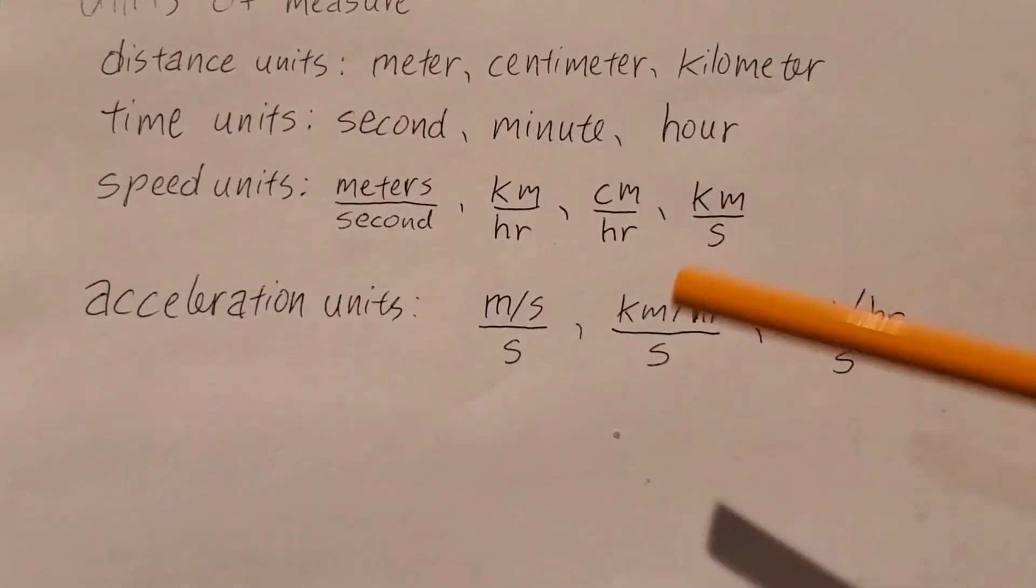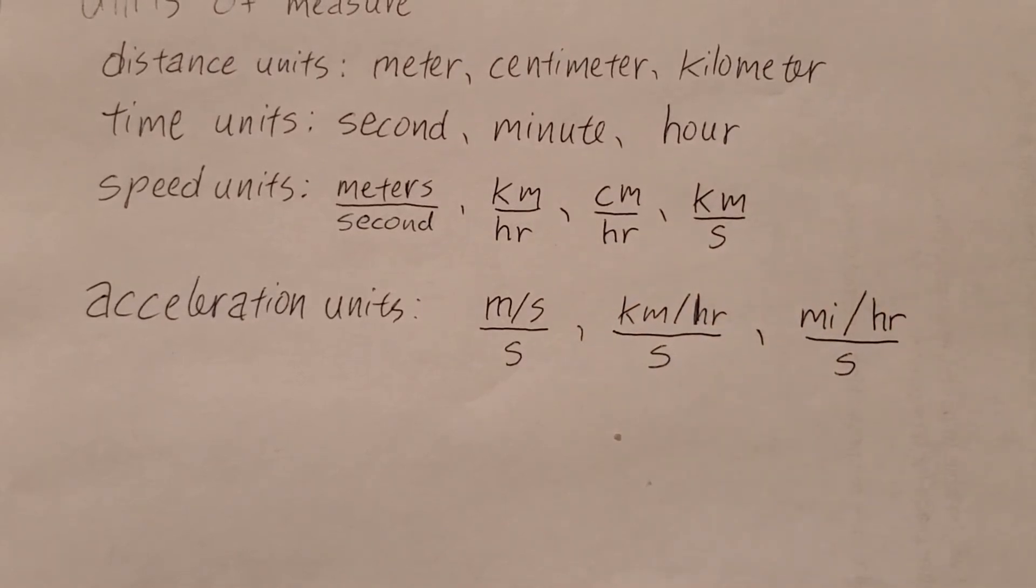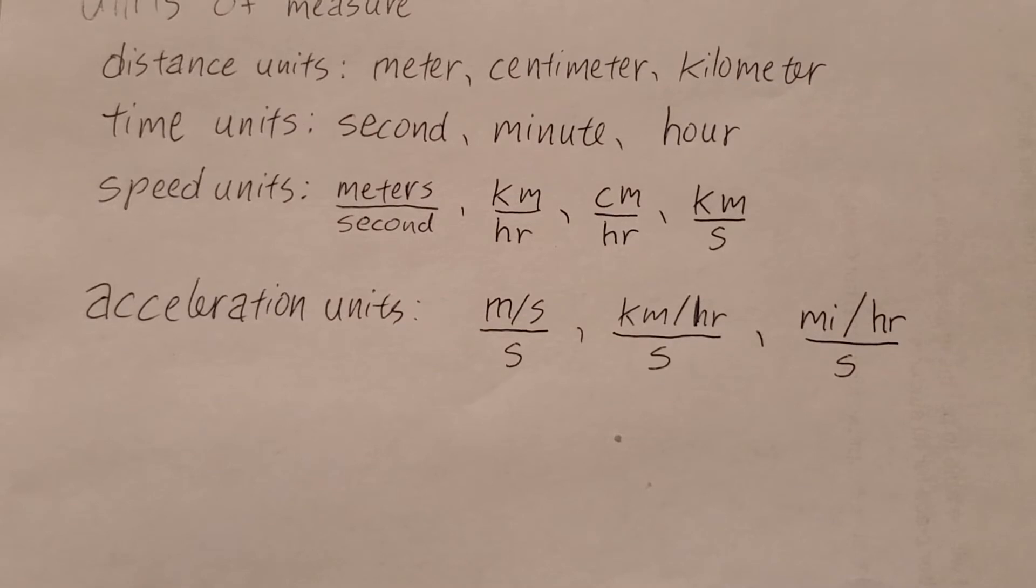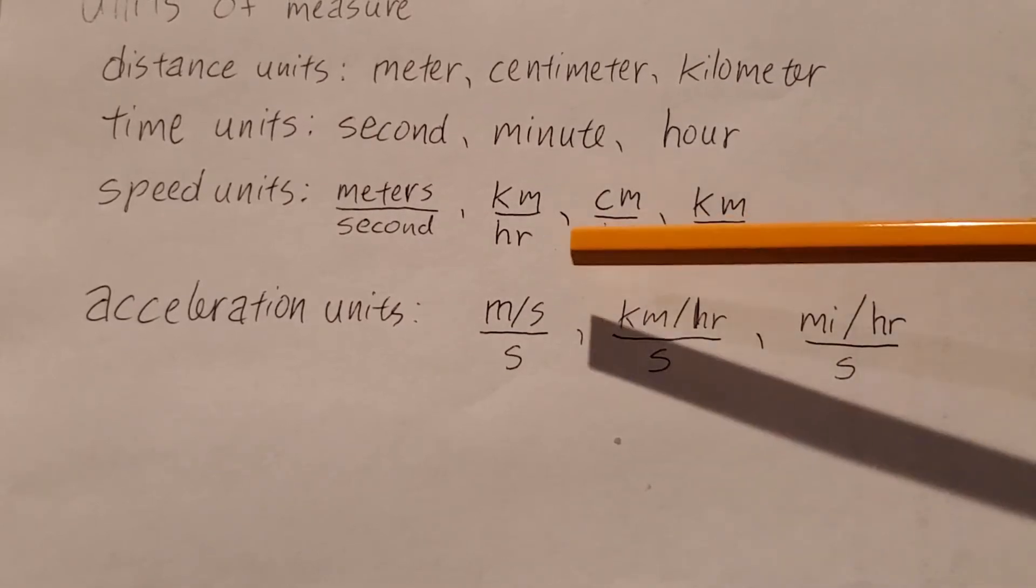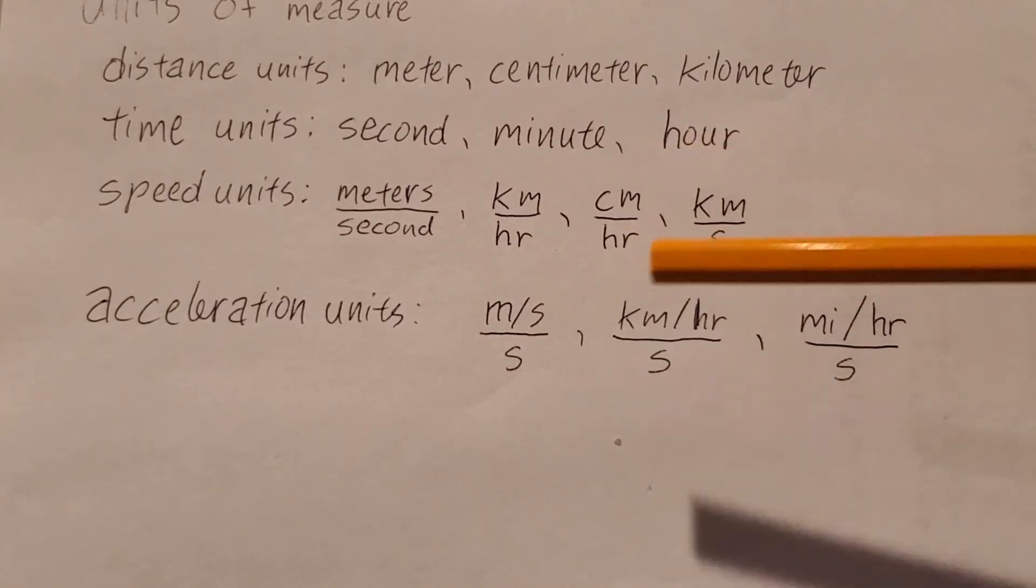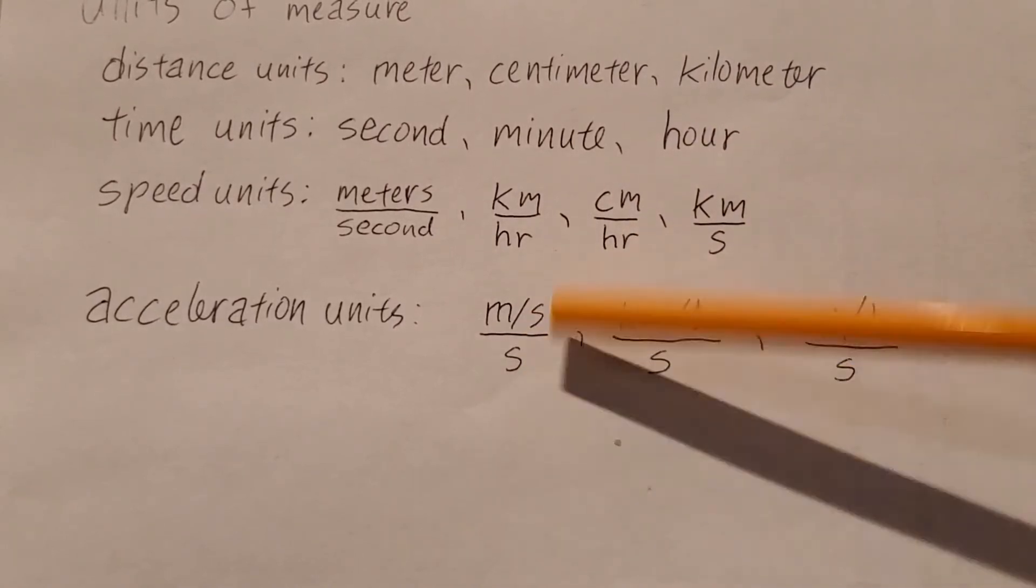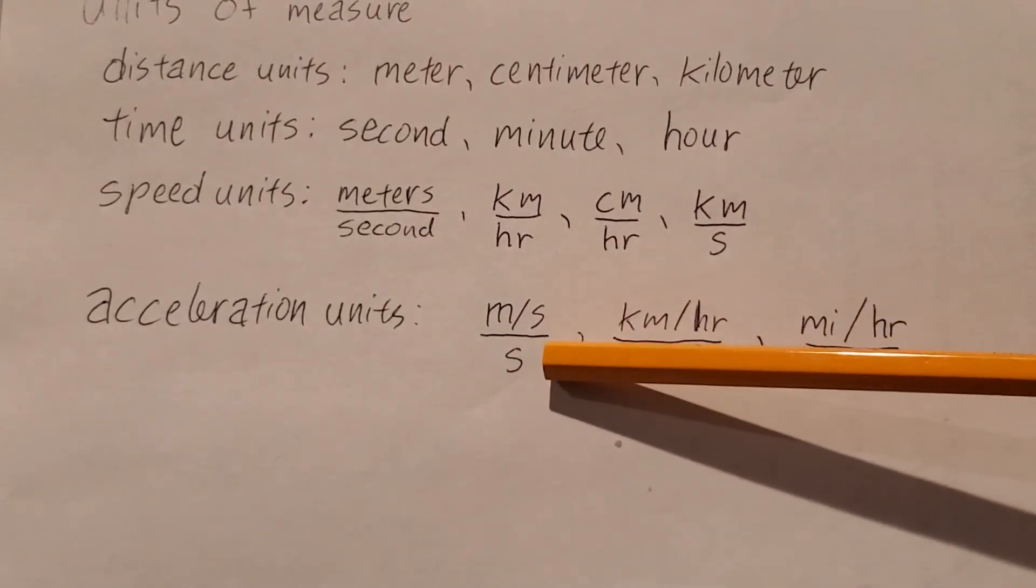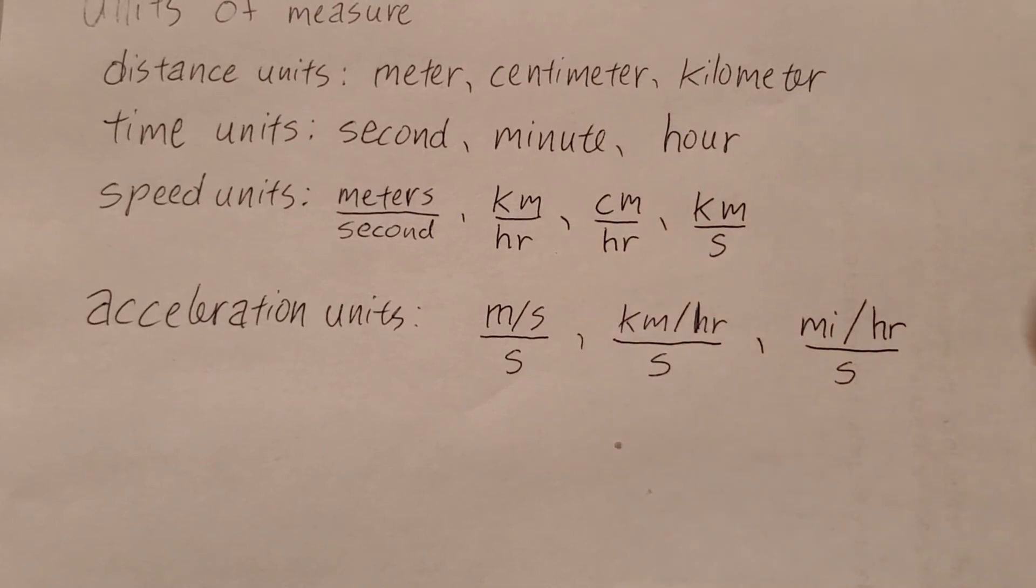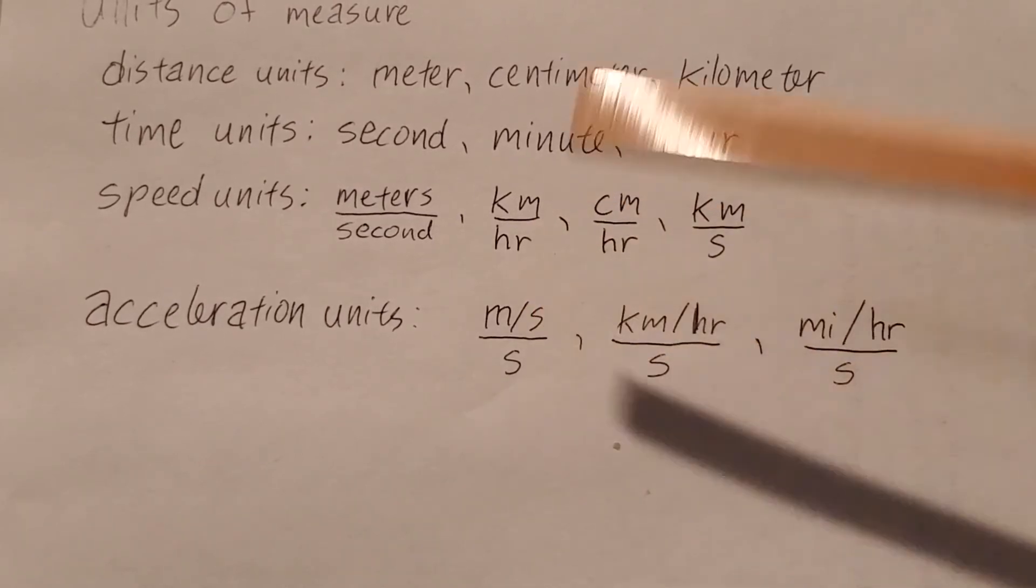Acceleration units can take some time to wrap your heads around. Here are some examples of acceleration units. Acceleration units have to do with how fast your speed is changing. So speed is in meters per second, and then it changes over time. So you have meters per second per second. This would mean for every second, your speed changes by a meter per second.